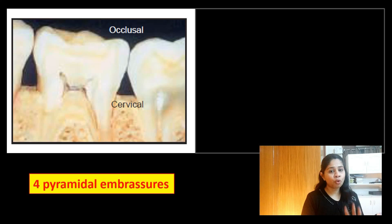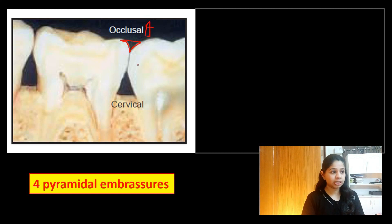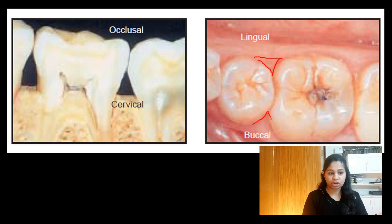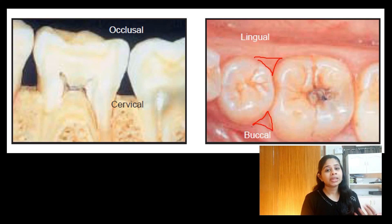...this space is made up of four pyramidal embrasures. The first is the occlusal or incisal embrasure, seen on the occlusal aspect — or the incisal aspect in case of anterior teeth. Towards the gingival aspect we have the cervical or gingival embrasure. In the buccolingual aspect we have the lingual embrasure — also called the palatal embrasure for maxillary teeth — and ultimately the buccal embrasure on the buccal aspect. These are the four embrasures which form the interdental space.